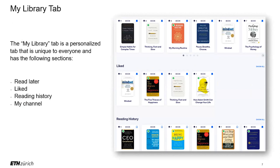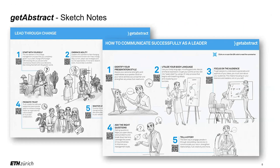The My Library tab is a personalized tab that is unique to everyone and has the following sections: Read Later, if you want to add a summary to read or listen to for offline use; My Channel, where you can create your own channel for organizing content; and Liked, where summaries you have liked will show up. The newest part added to the database content is the sketch notes category — visual notes using writing and drawing in a fun and simple way. Behind every QR code, you will find a link to a summary related to that specific topic.